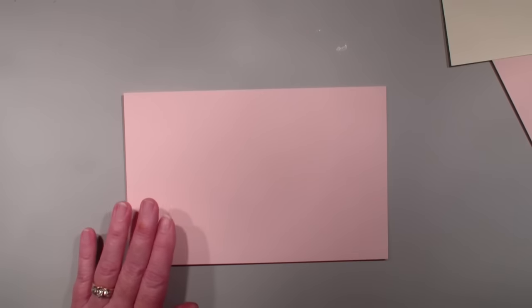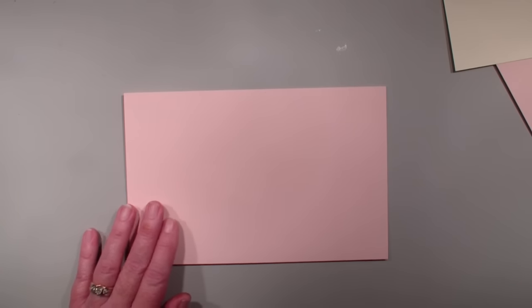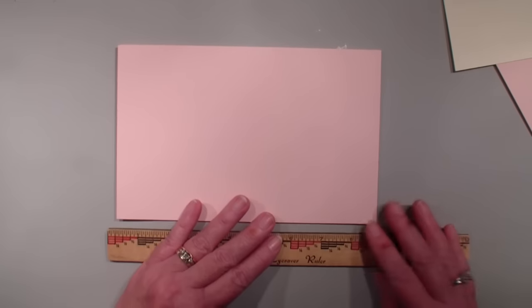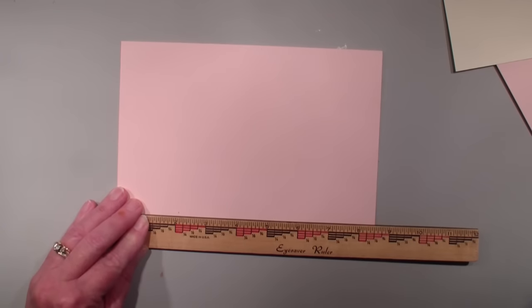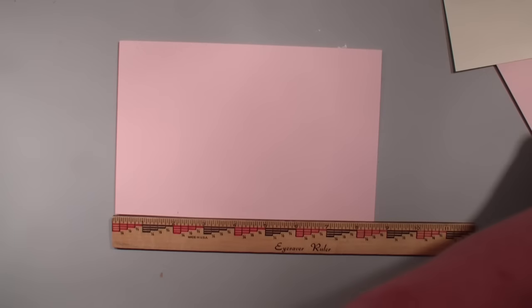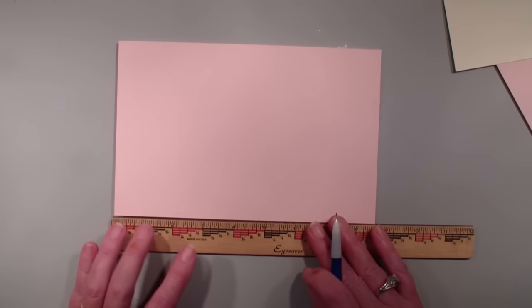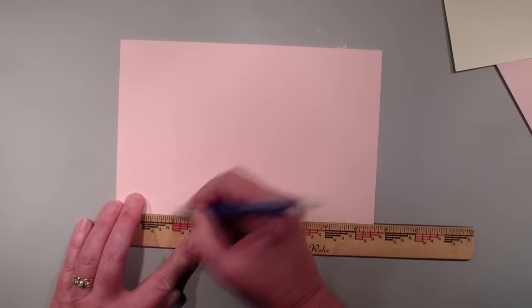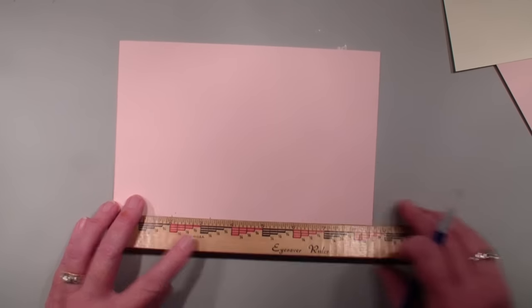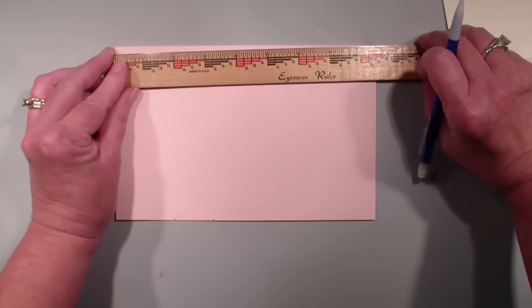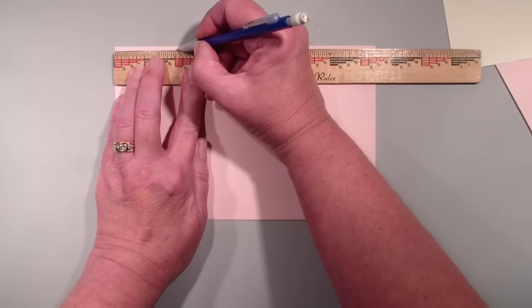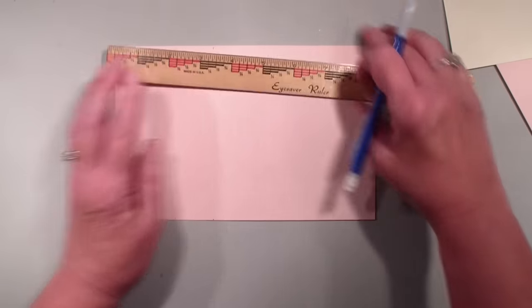We're going to use a standard piece of card stock. This measures 5.5 by 8.5 and I'm going to bring in a ruler. I'm going to mark it at the 2 inch mark and the 3 inch on both sides. So I'm going to go up here and mark 2 inch and 3 inch.